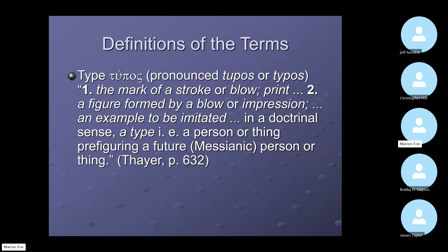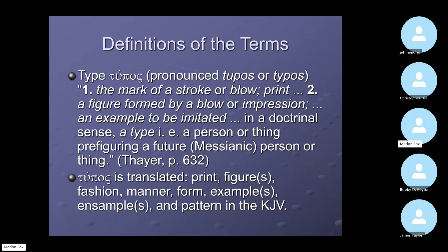Our English word 'type' came from the Greek tupos or typos — meaning the mark of a stroke, a blow, a print, a figure formed by a blow, an impression, an example to be imitated. In the doctrinal sense, a type is a person or thing prefiguring the future — something in the past that prefigures something in the future. It was designed to prefigure it. That's the key to it — designed to do that.